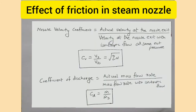Nozzle velocity coefficient is the ratio of actual velocity at the nozzle exit to the velocity at the nozzle exit with isentropic flow at the same exit pressure. Coefficient of discharge is the ratio of actual mass flow rate to the mass flow rate with isentropic flow. Therefore, CD equals ṁ / ṁs.